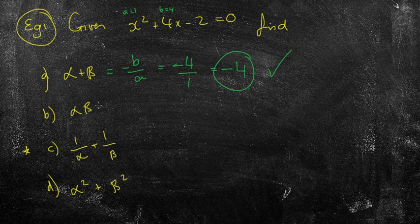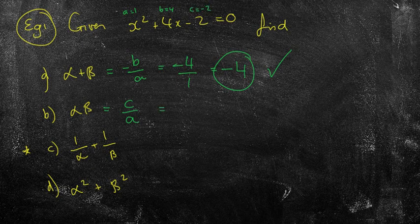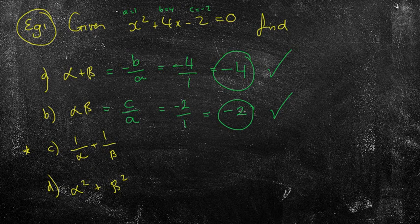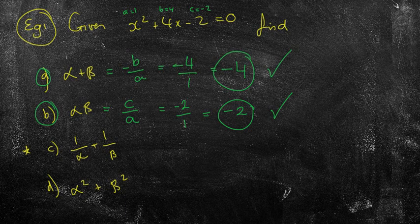Okay, ticks away. The next one is alpha beta, which we know the formula, again, you need to memorize that one, is c on a. So, in this case, c equals negative 2. So, I've got negative 2 over our a, which is simply equaling to negative 2. Okay, got my second mark. So, they're the very two basic ones that they'll ask you. You need to, as I said, memorize those formulas to be able to answer those questions.